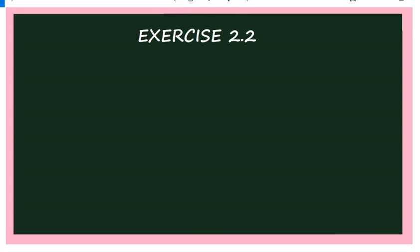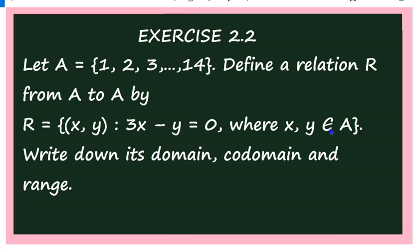Hello students. In this video, let us solve some exercise problems on the concept of relation. See the first question: Let A be defined, and define a relation R from A to A by R = {(x,y) : 3x - y = 0}, where x and y belong to A. Write down its domain, co-domain and range.